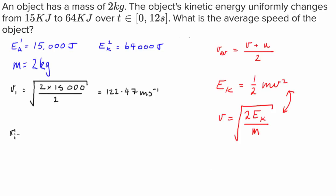We can then work out velocity 2 by doing exactly the same thing. We're going to go 2 times the kinetic energy, 64,000, and then we're going to divide it by 2. So effectively, the mass and the fact that we're multiplying it by 2 will cancel each other out. We could just take the square root of 64,000. And this is 252.98 meters per second.